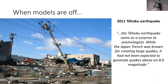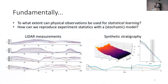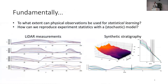To start, I have to give this example — also in that poster there — just to show how connected things are. This is the big event that happened in Japan, the Tohoku earthquake. The idea is: we have these models, so what happens when the model is off? This quote from Wikipedia says the Tohoku earthquake came as a surprise to seismologists. While the Japan Trench was known for creating large quakes, it had not been expected to generate quakes above an 8.0 magnitude. It really tells us that even though we have models, it's about understanding all the possible outcomes they can generate.